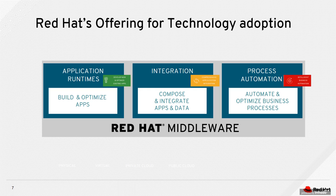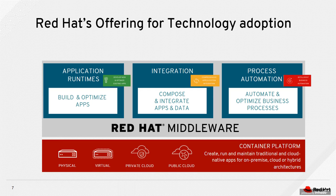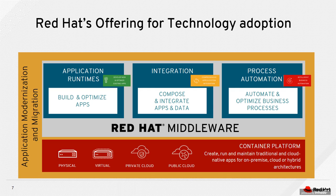Let's start with an overview of the AMM initiative. I want to give you a big picture of the program. Our Red Hat middleware portfolio is made of three main pillars: application runtime, integration, and process automation. They can run on top of our container platform, OpenShift. Application modernization and migration, also known as AMM, is basically the framework, the umbrella.